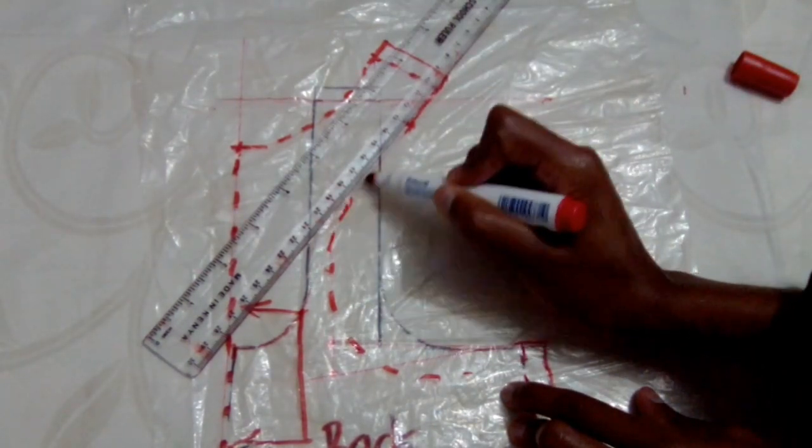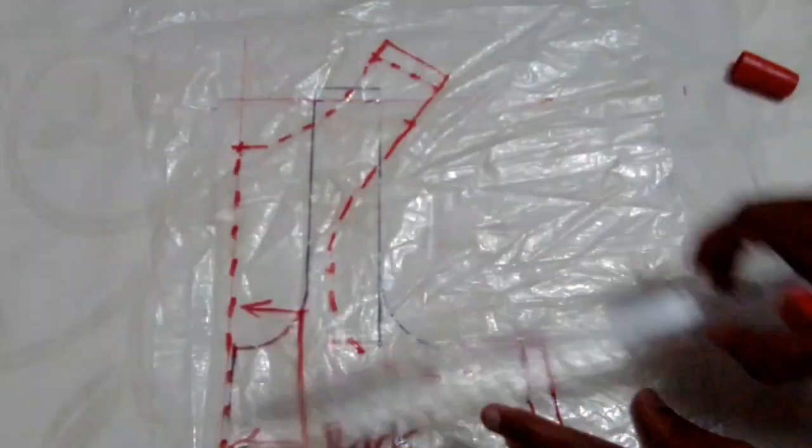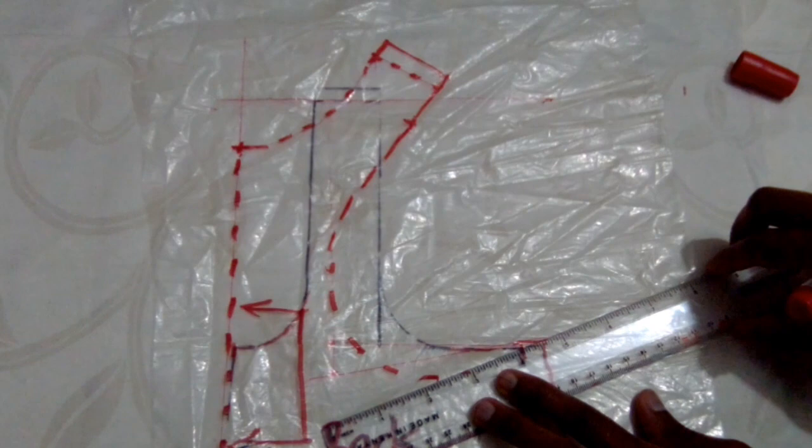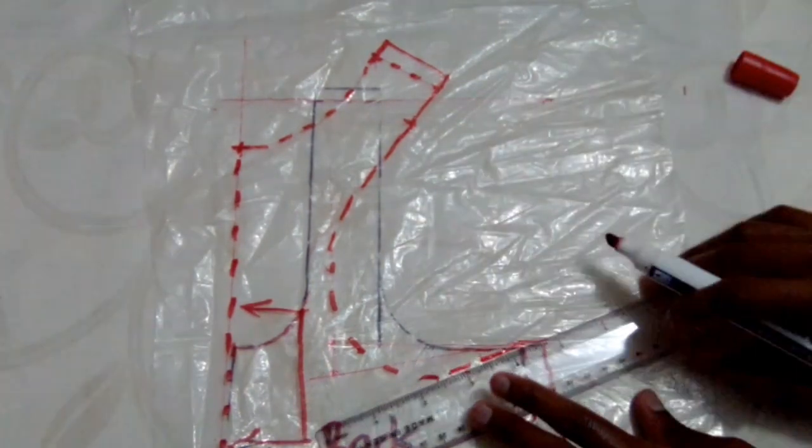Then I'm going to freehand the rest of this, so I'm just going to continue the racer back arm and then I'm going to draw the rest of the scoop to touch my side seam.